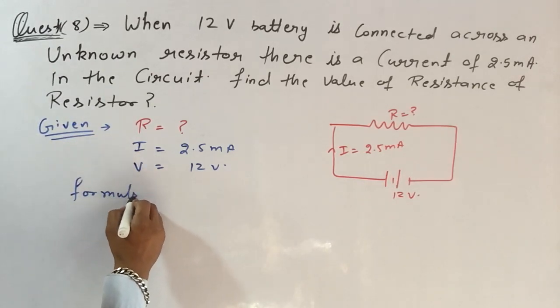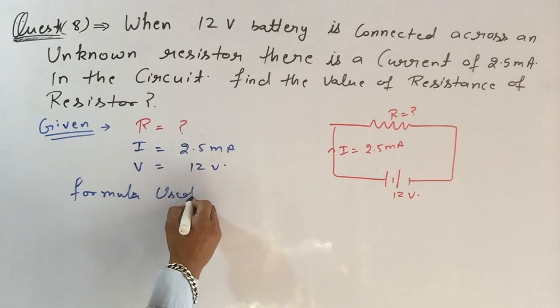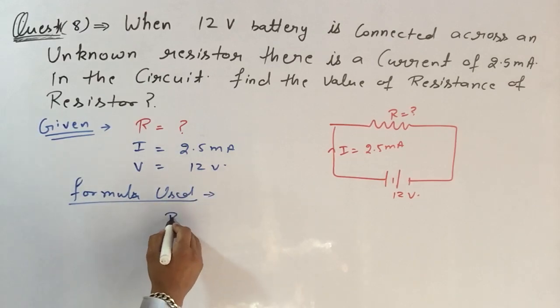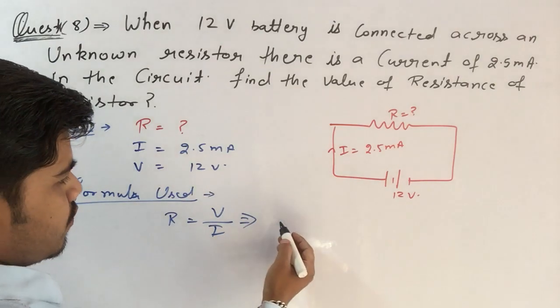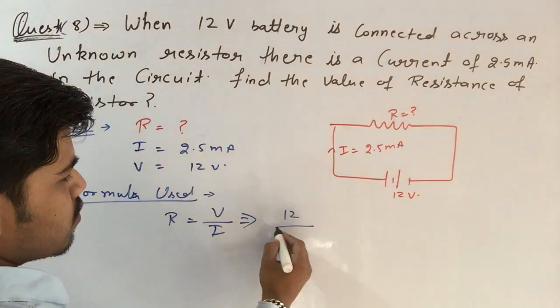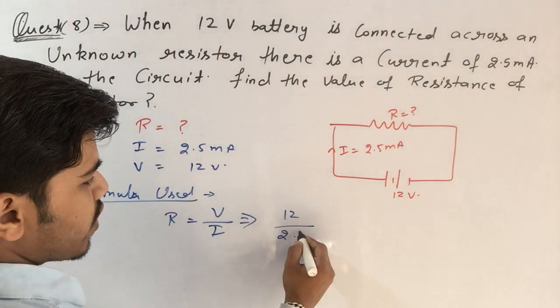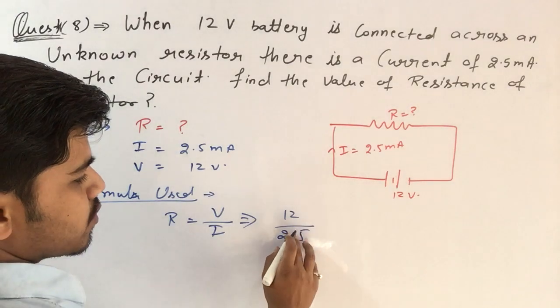Formula used: formula for resistance is in form of V and I. This is V by I. V is 12 volts and I is 2.5 milliamperes.